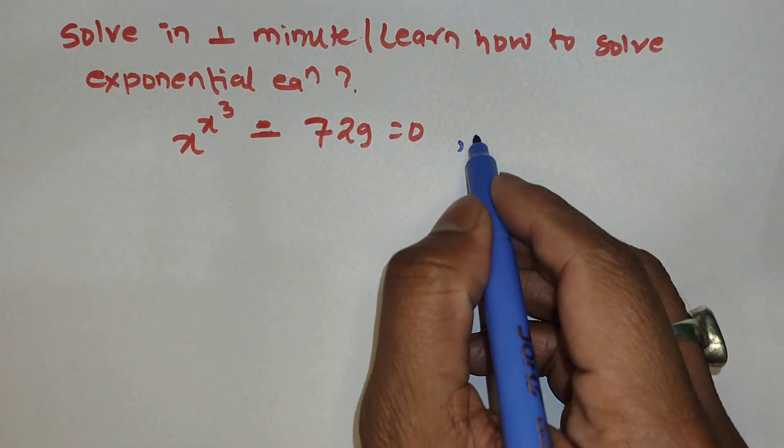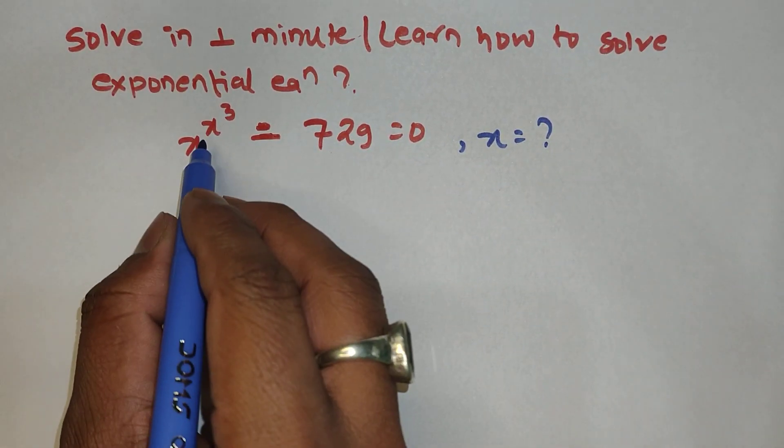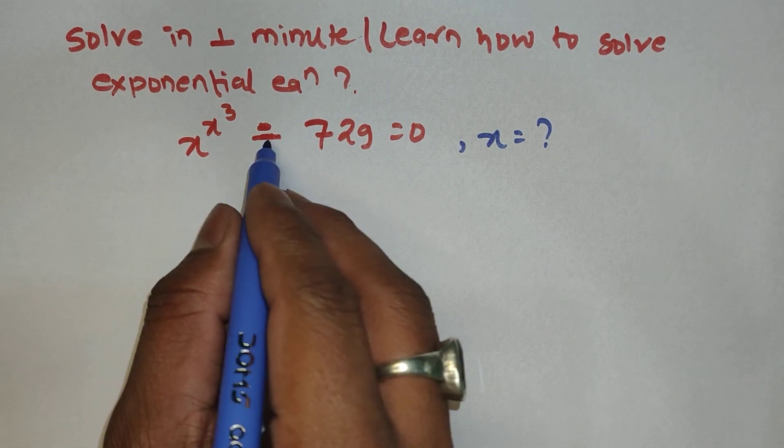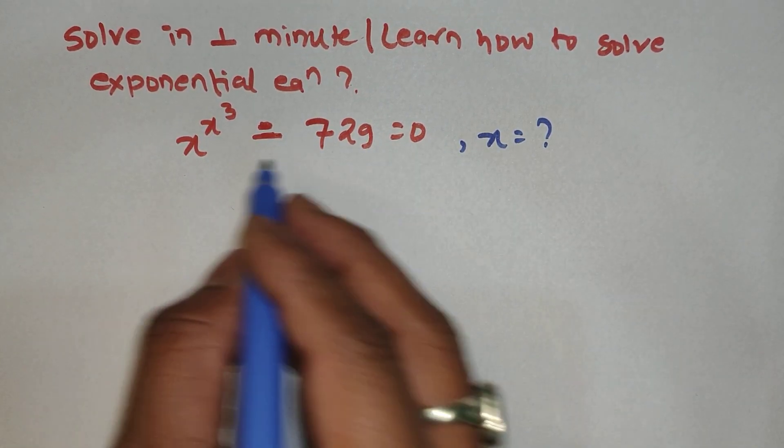From this equation, let's get into the question and find the solution. Here, x to the power x to the power 3 minus 729 - we are going to move 729 to the right side.